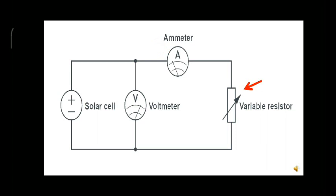A variable resistor is also given here. This is for changing voltage and current values.